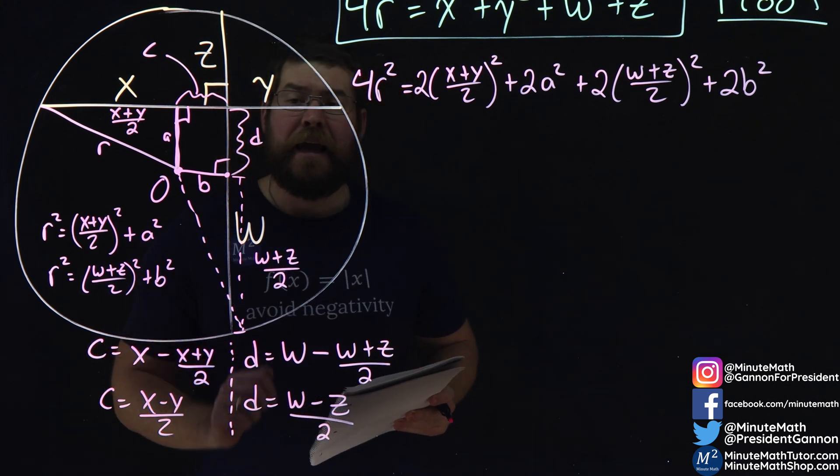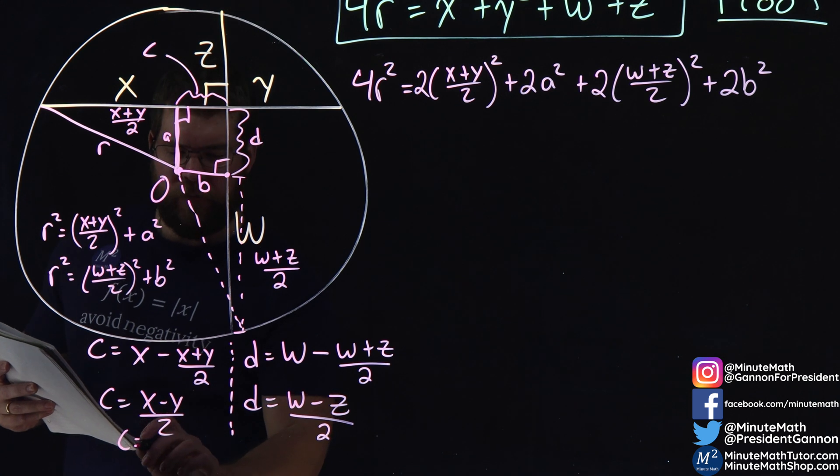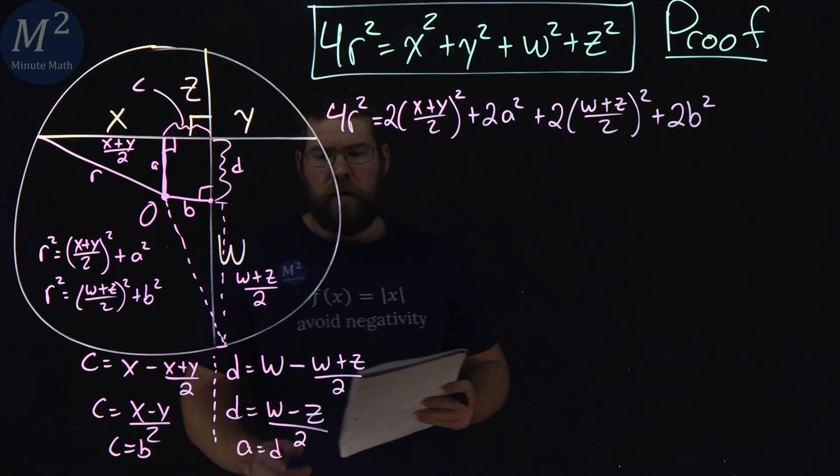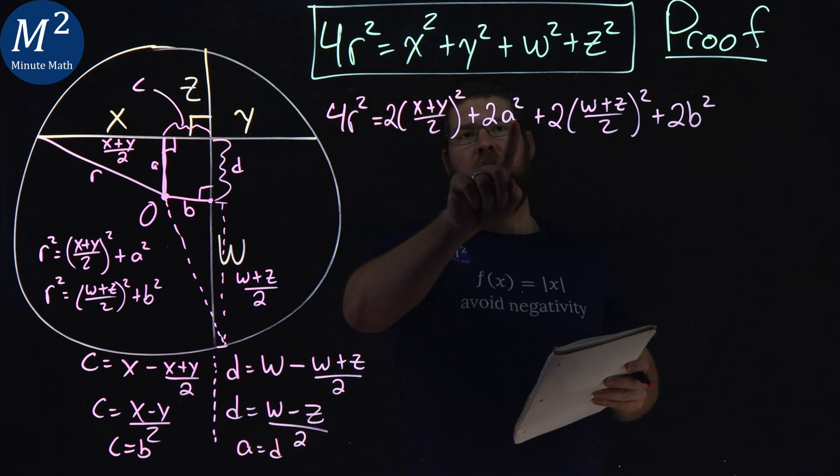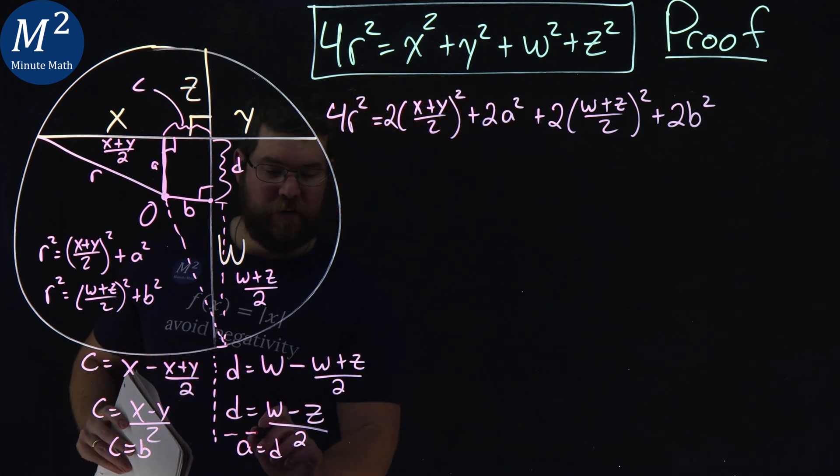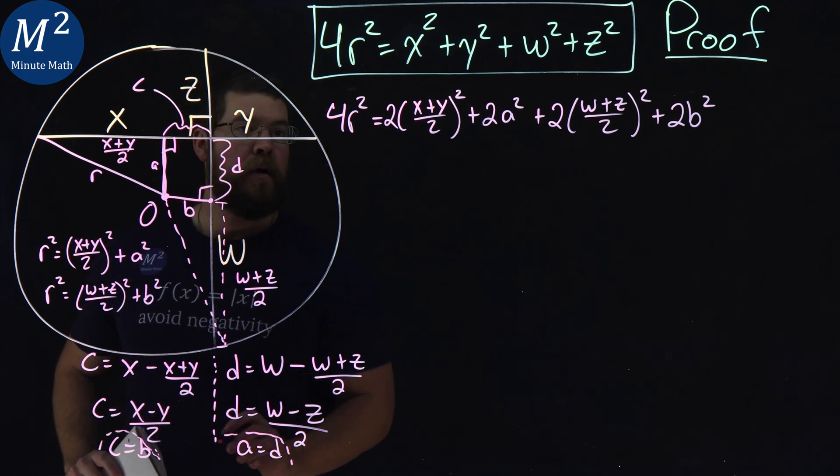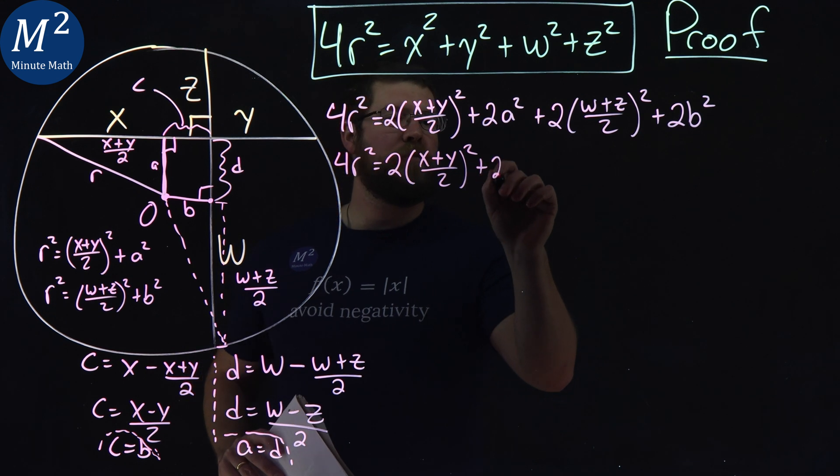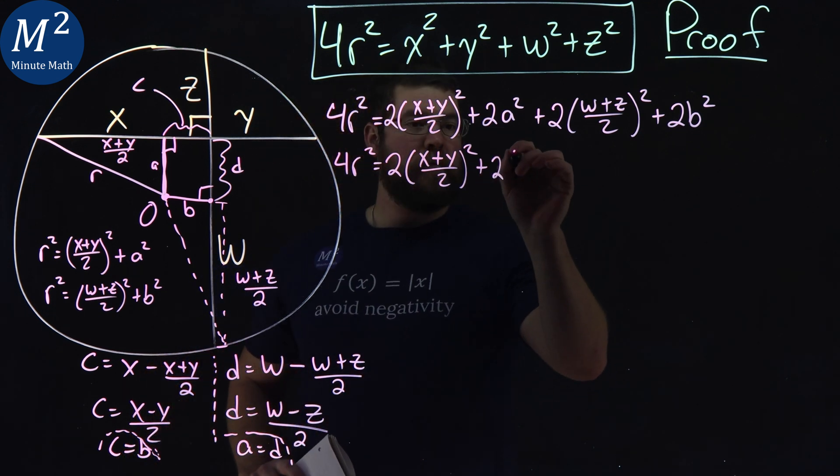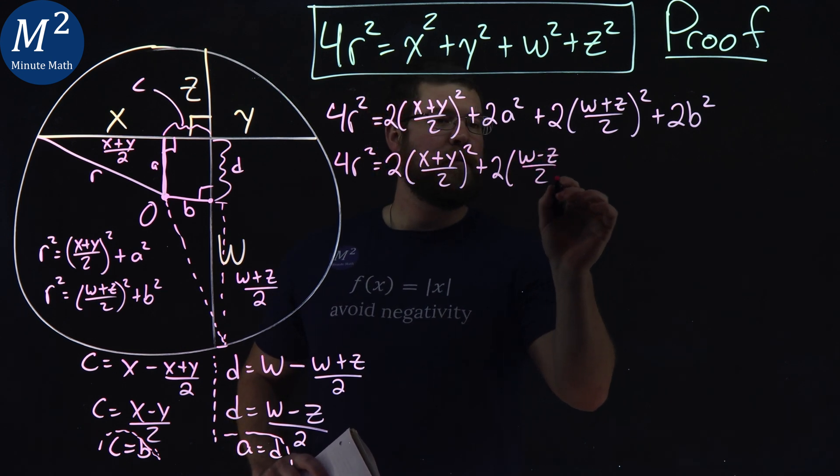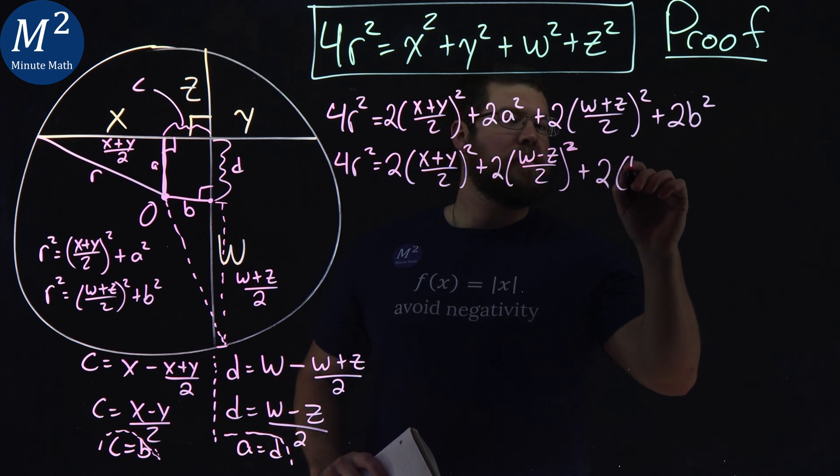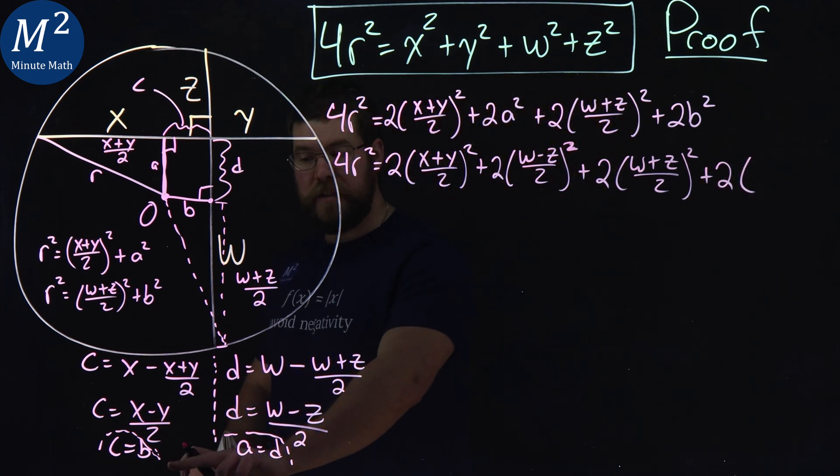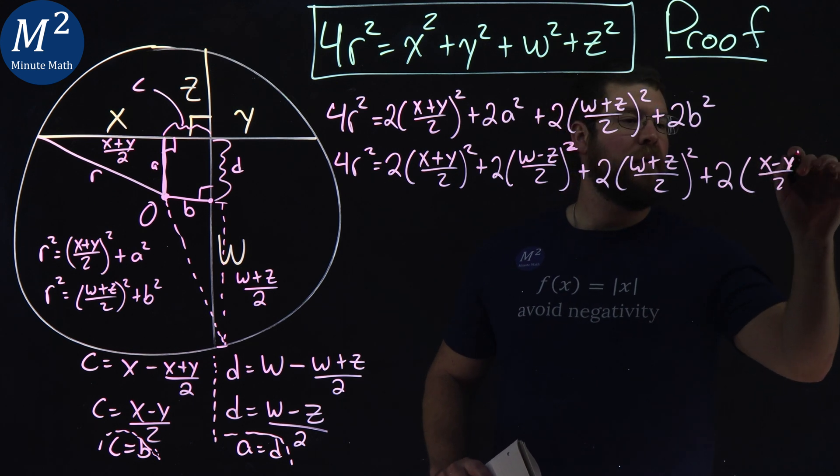What do we know about c and d? Well, c equals b, being across for the rectangle, and a equals d. We can plug our values in. Instead of a, we can have d, which is (w - z)/2. So we'll rewrite this: 4r² = 2[(x + y)/2]² + 2[(w - z)/2]² + 2[(w + z)/2]² + 2[(x - y)/2]².